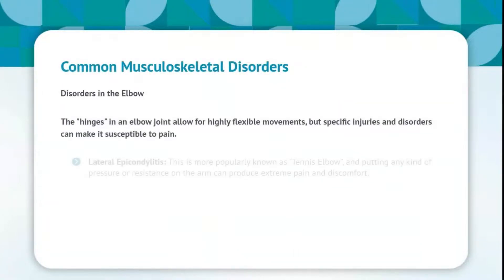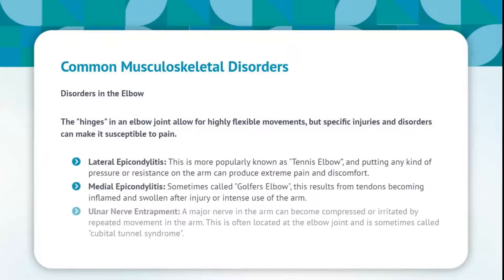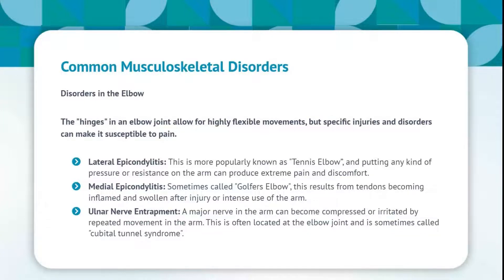Disorders in the elbow: the hinge in an elbow joint allows for highly flexible movements, but specific injuries and disorders can make it susceptible to pain. Lateral epicondylitis, more popularly known as tennis elbow, causes extreme pain and discomfort when any pressure or resistance is applied to the arm. Medial epicondylitis, sometimes called golfer's elbow, results from tendons becoming inflamed and swollen after injury or intense use of the arm. Ulnar nerve entrapment occurs when a major nerve in the arm becomes compressed or irritated by repeated movement, often located at the elbow joint, sometimes called cubital tunnel syndrome.